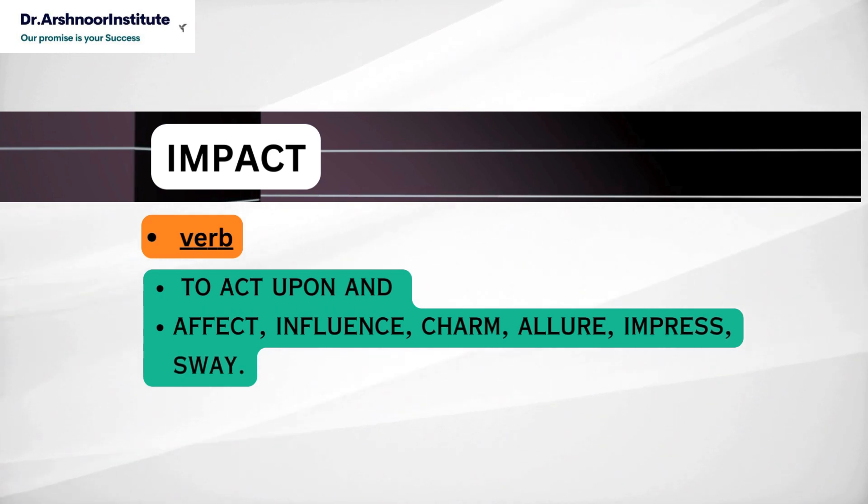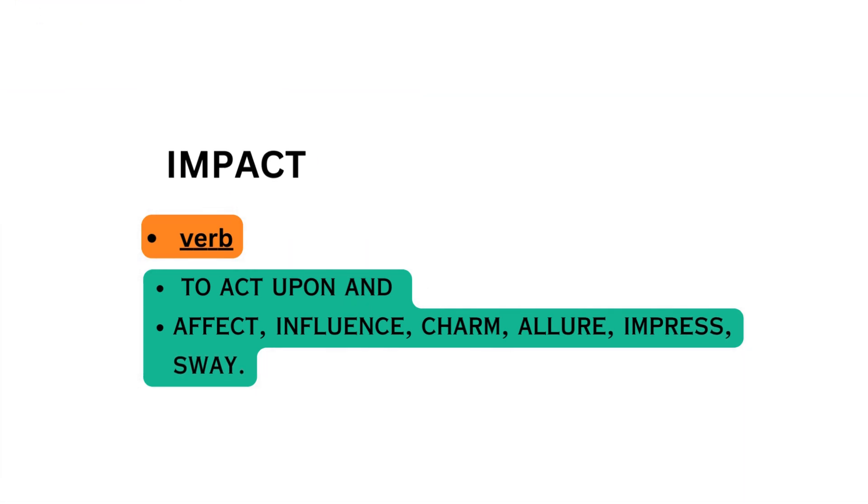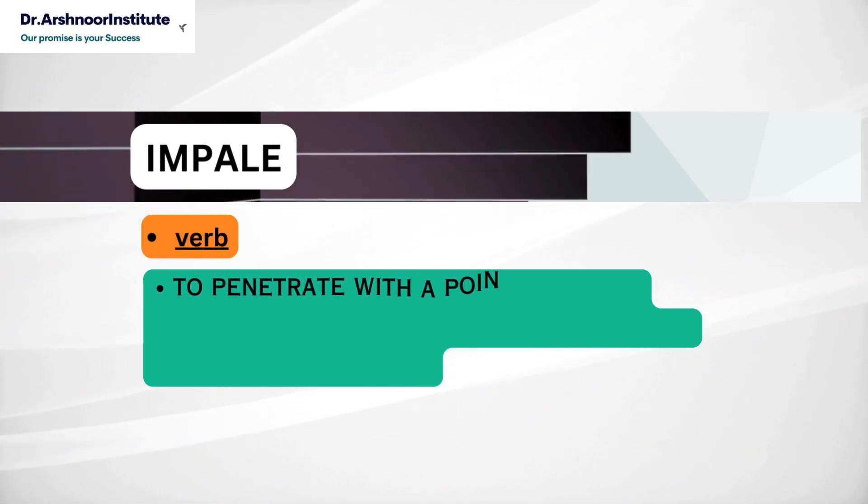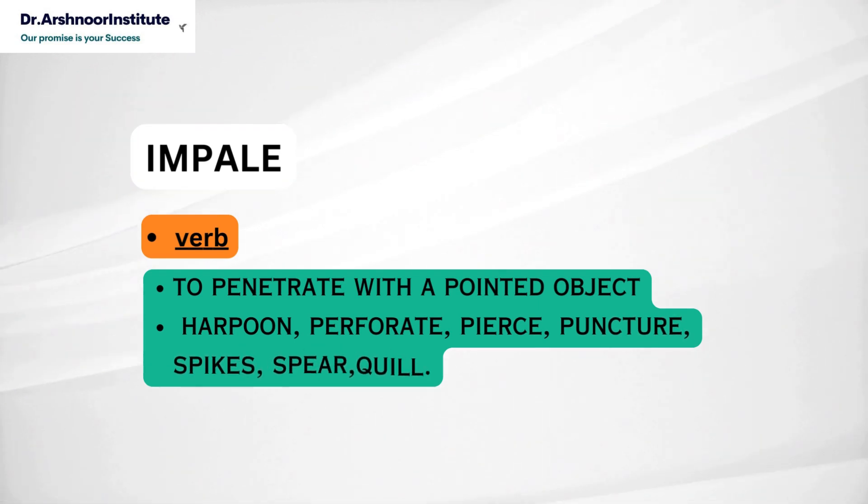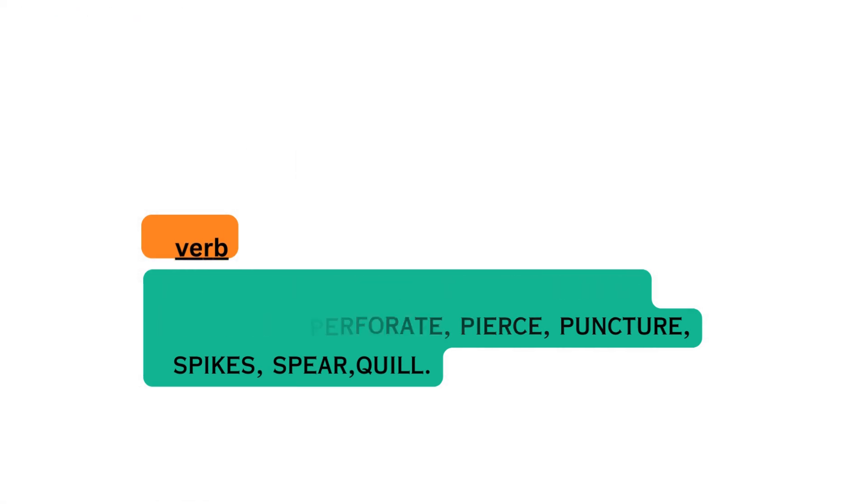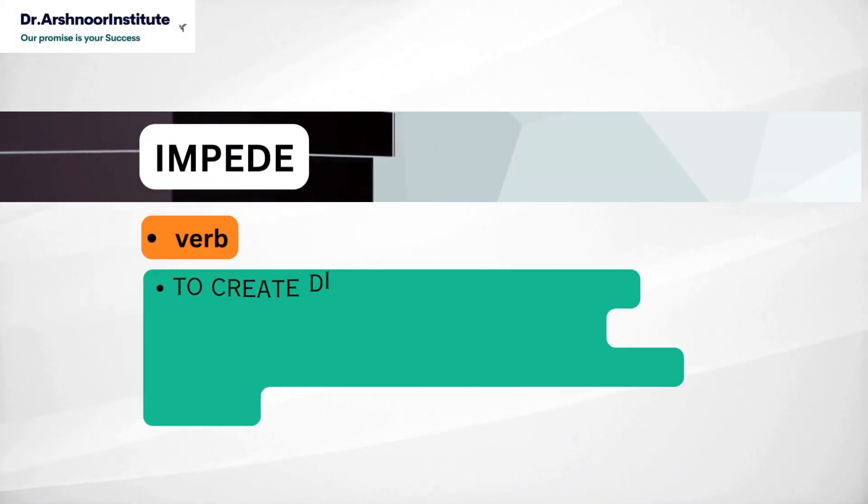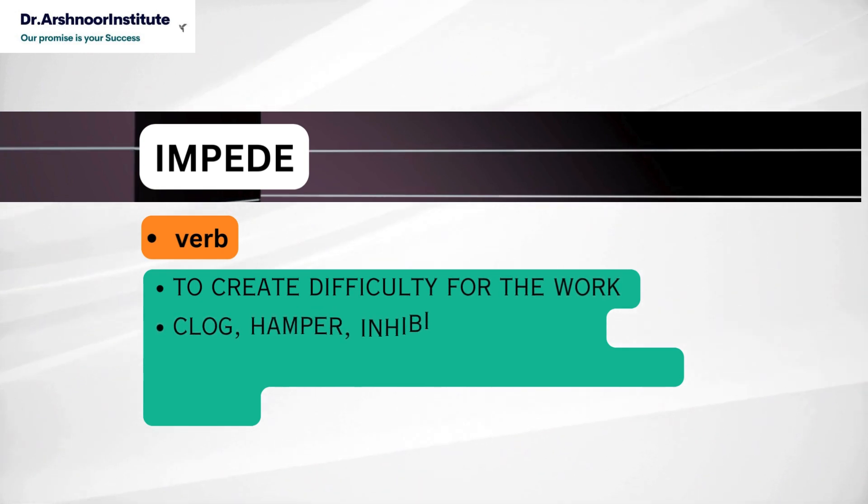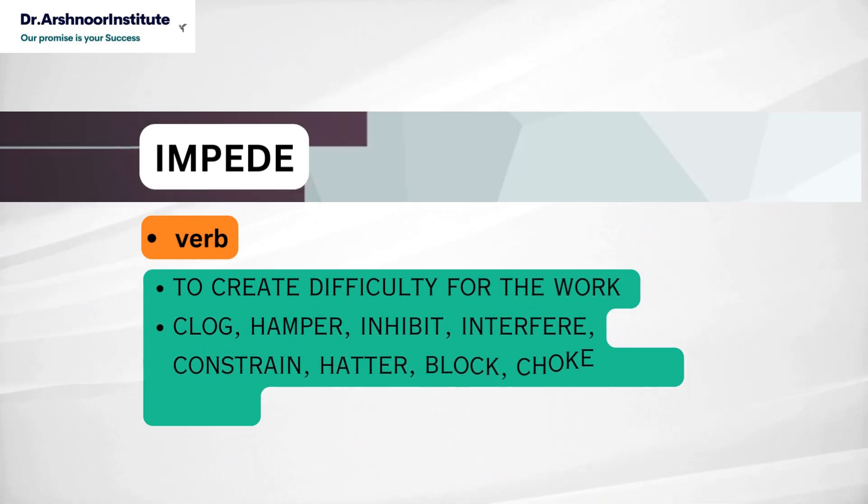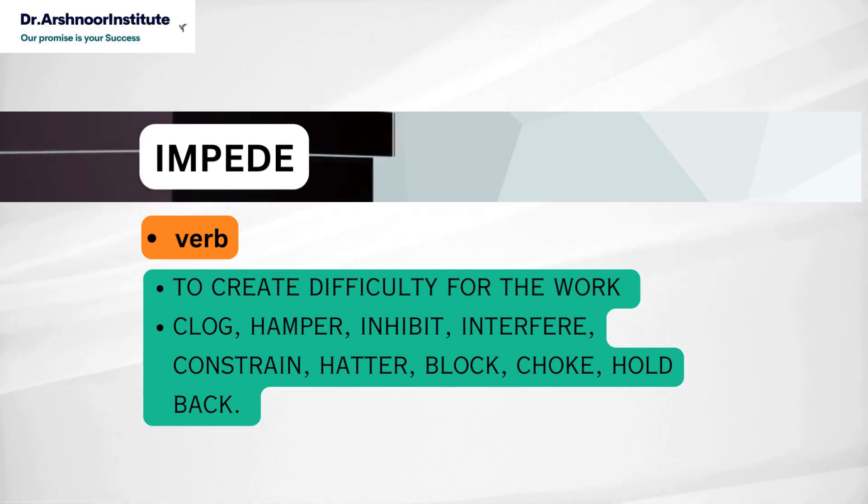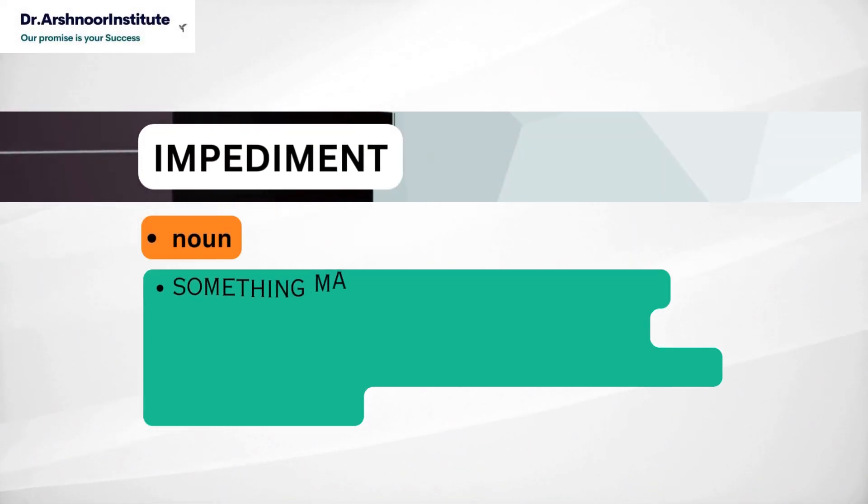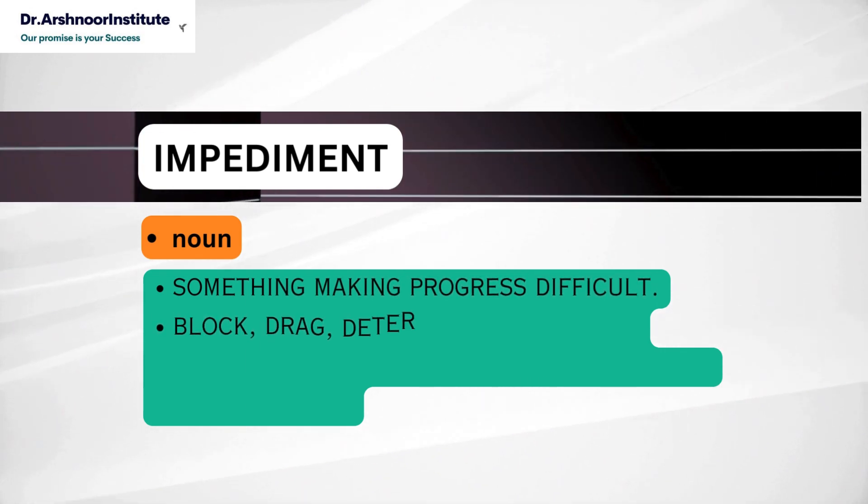Fourth word is impale and it's a verb. It means to penetrate with a pointed object and its synonyms are harpoon, perforate, pierce, puncture, spike, spear, skewer, quill. Impede. It's a verb and it means to create difficulty for the work and its synonyms are clog, hamper, inhibit, interfere, constrain, halter, block, choke, hold back. Impediment. It's a noun and it means something making progress difficult. Its synonyms are block, drag, deterrent, hurdle, obstacle, shackle, hitch, barrier, brake, hazard, peril.